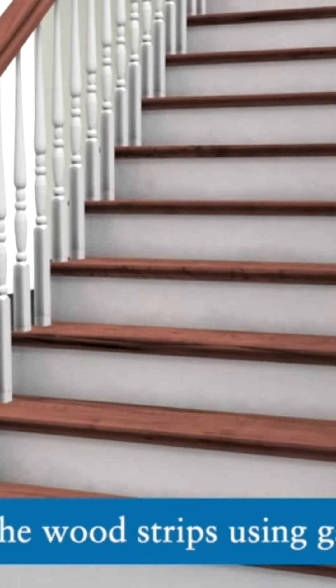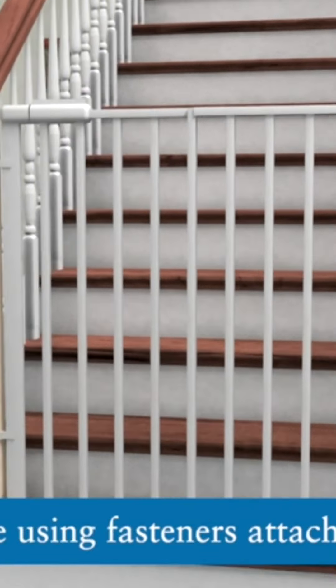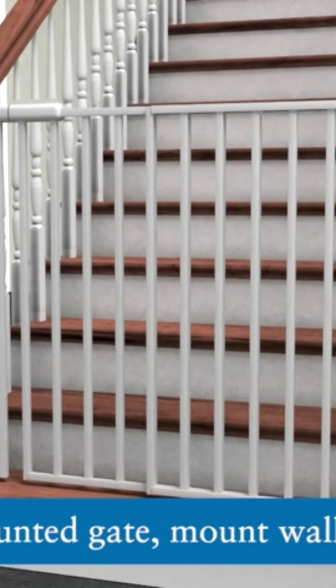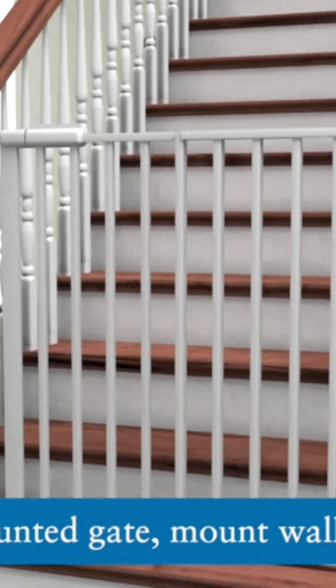Install your gate to the wood strip per the safety gate installation instructions. This will be done using fasteners attached directly to the wood strip, or if you are using a pressure mount gate, mount the wall cups directly to the wood strip.